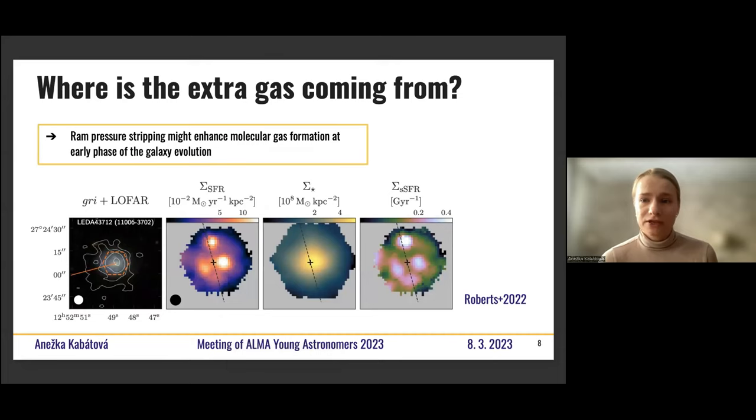And the idea is that when you imagine the ram pressure acting from the front of the galaxy that's falling into the cluster, it compresses the gas on the leading half of the galaxy. And this compression causes conversion from atomic to molecular gas. And the molecular gas then fuels the star formation that would happen on the leading part of the galaxy explicitly. So this idea was recently explored in paper by Roberts, 2022.